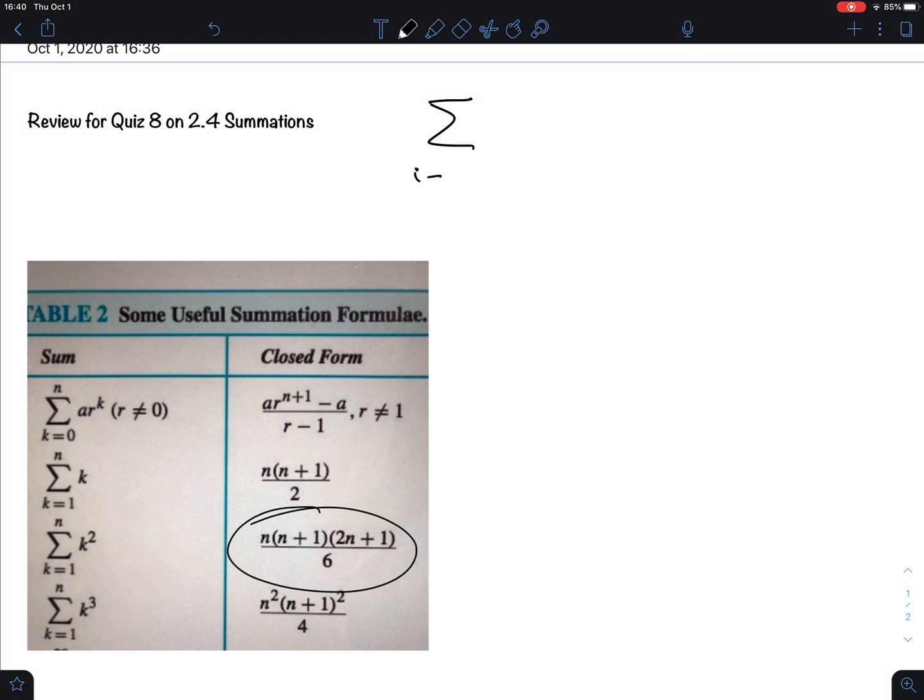One thing you're going to get is something where you have to use the table that I've already copied for you. For instance, here's the question: suppose you have to do the sum for i going from 10 to 20, 2 times 3 to the power i. What you always have to pay attention to is that in the tables, the formulas always start from the beginning, and often this is just 1 or 0.